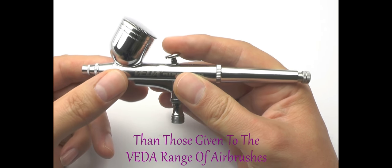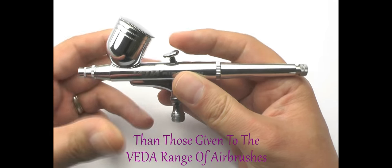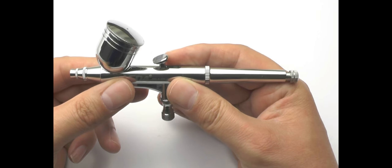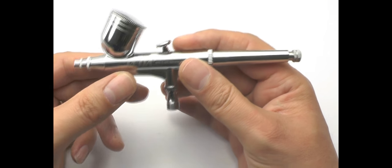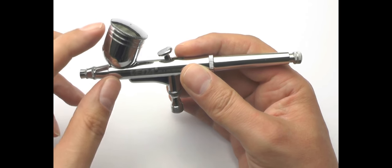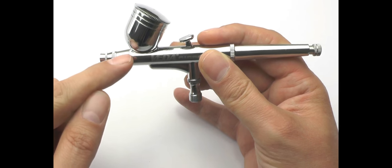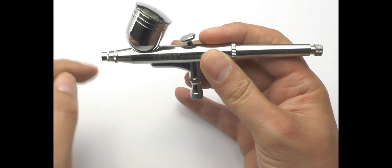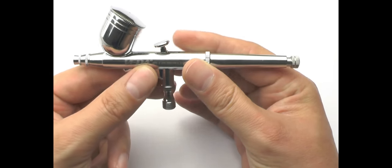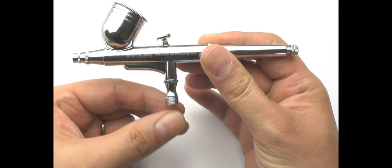So that is the dual action: push down, pull back. On this particular model, just to give an overview, what we've got here is a gravity feed because the paint is in the top cup and it simply is pushed down or pulled through by gravity. I'll go through the basic setup.